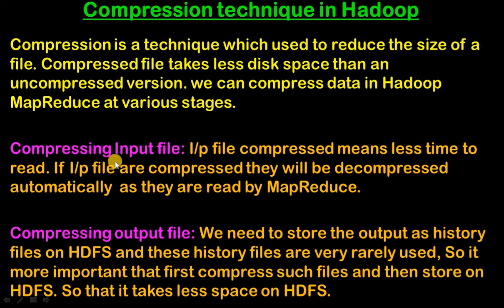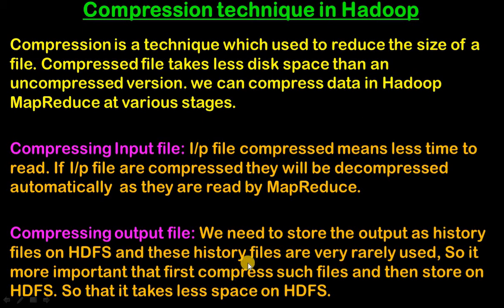First is compressing the input file. If input files are compressed, they take less time to read and will be decompressed automatically as they are read by MapReduce. Second is compressing the output file — we need to store the output as history files on HDFS. These history files are very rarely used, so it is more important to first compress such files and then store them on HDFS, so that they take less space.